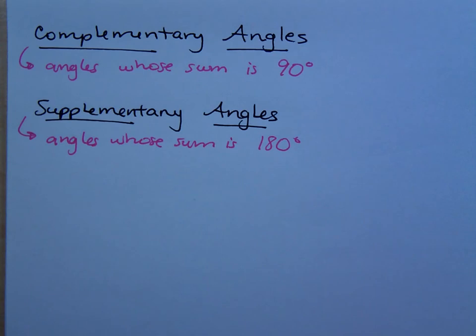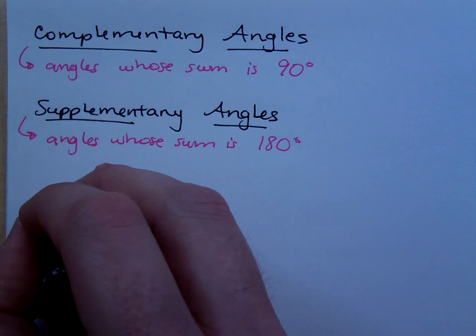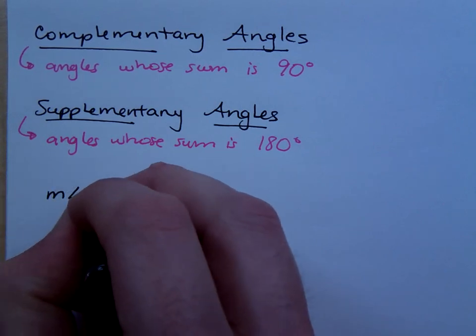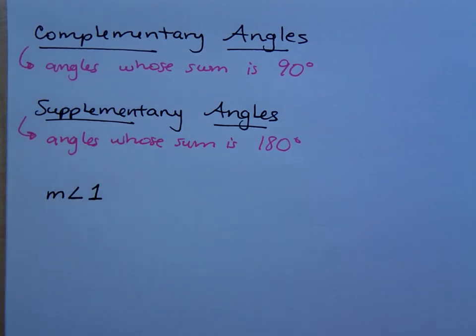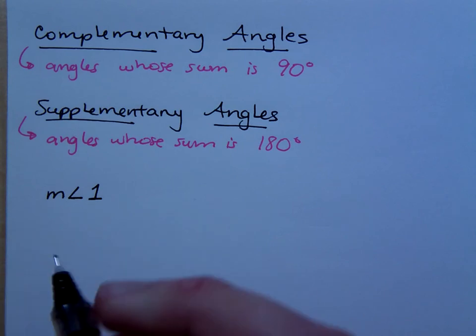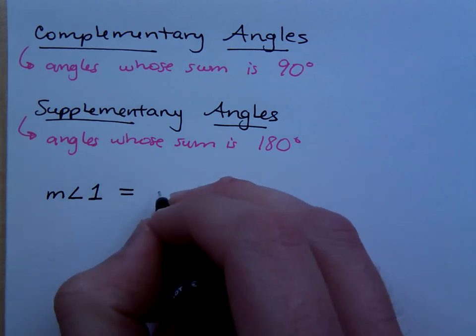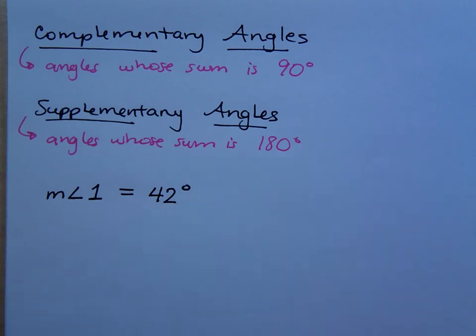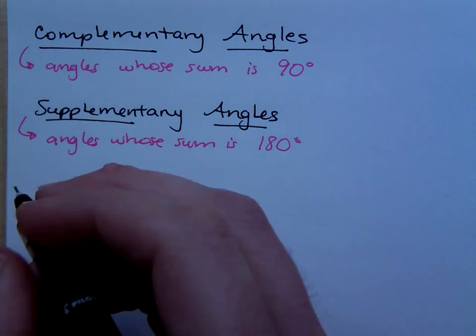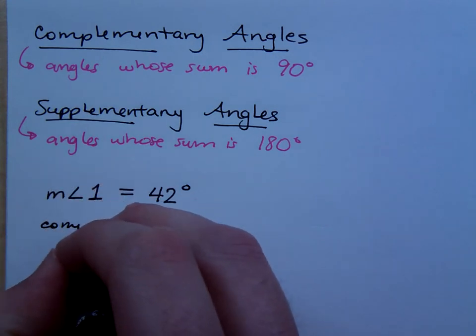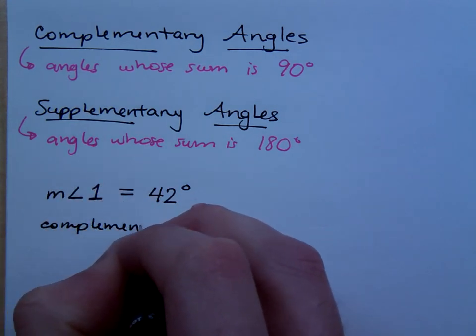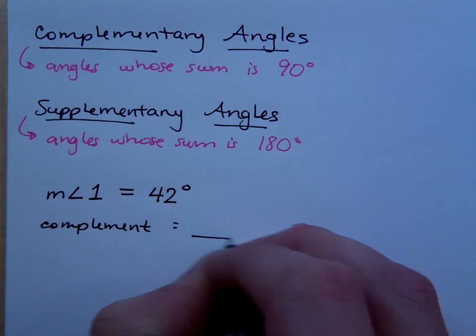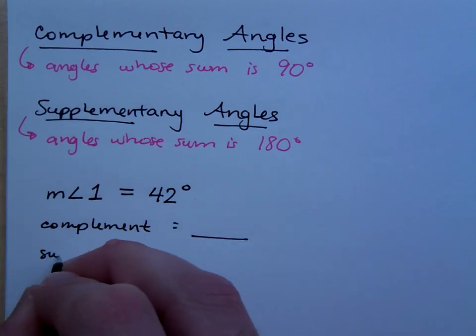So, if I told you this, if I said the measure of angle 1, this is how you talk about the measure of an angle. If I said the measure of angle 1 is 42 degrees, then what would be the measure of its complement? And what would be the measure of the supplement?